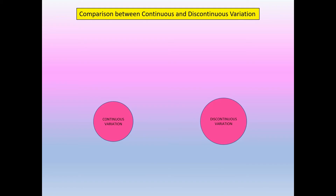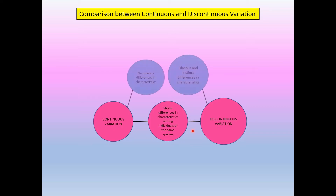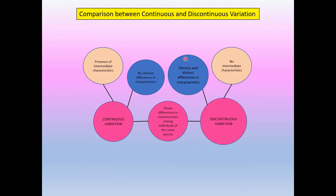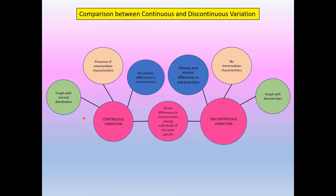Comparison between continuous and discontinuous variations. The similarity is both show differences in characteristics among individuals of the same species. Differences — number one: continuous variation shows no obvious differences in characteristics, whereas discontinuous variation shows obvious and distinct differences. Number two: continuous variation has intermediate characteristics, whereas discontinuous variation has no intermediate characteristics. Number three: continuous variation produces a graph with normal distribution, whereas discontinuous variation produces a graph with discrete bars.